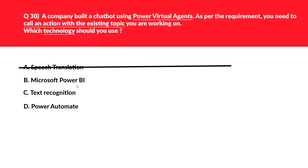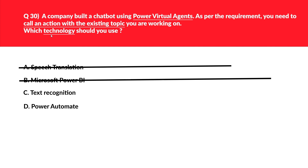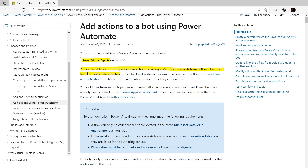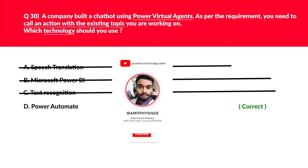Option B is Microsoft Power BI — Power BI is used for data visualization, and as per the question, there is no need to visualize data. Hence, this seems to be an incorrect choice. Option C is text recognition, which extracts words from documents and images and can be used with Power Automate — this looks partially good, but the question is asking about technology, not a pre-built AI model. Option D is Power Automate, which looks like a better fit because you need to call an action, which can be automated using Power Automate flows. The official documentation under Power Virtual Agents confirms you can enable your bot to perform an action by calling a Microsoft Power Automate flow to help automate activities. We'll log Power Automate as the correct answer.